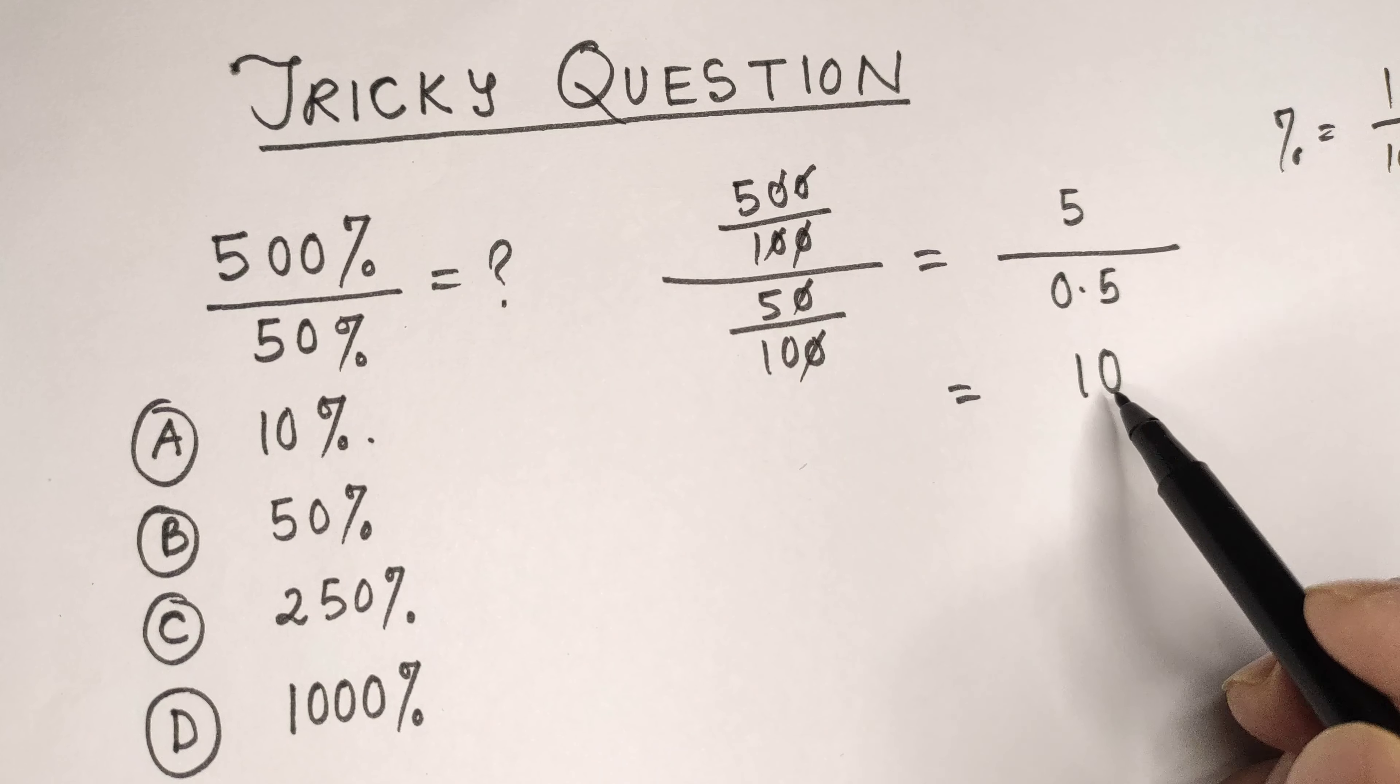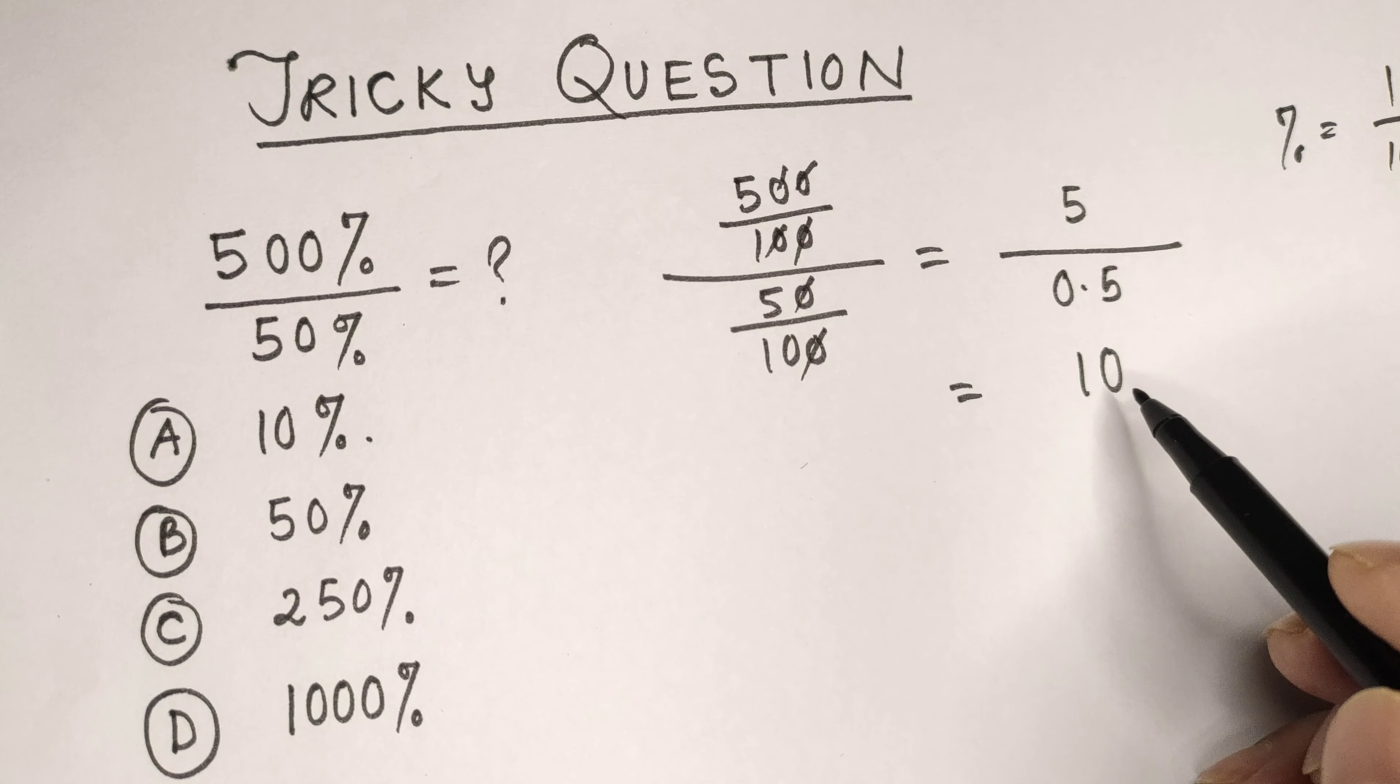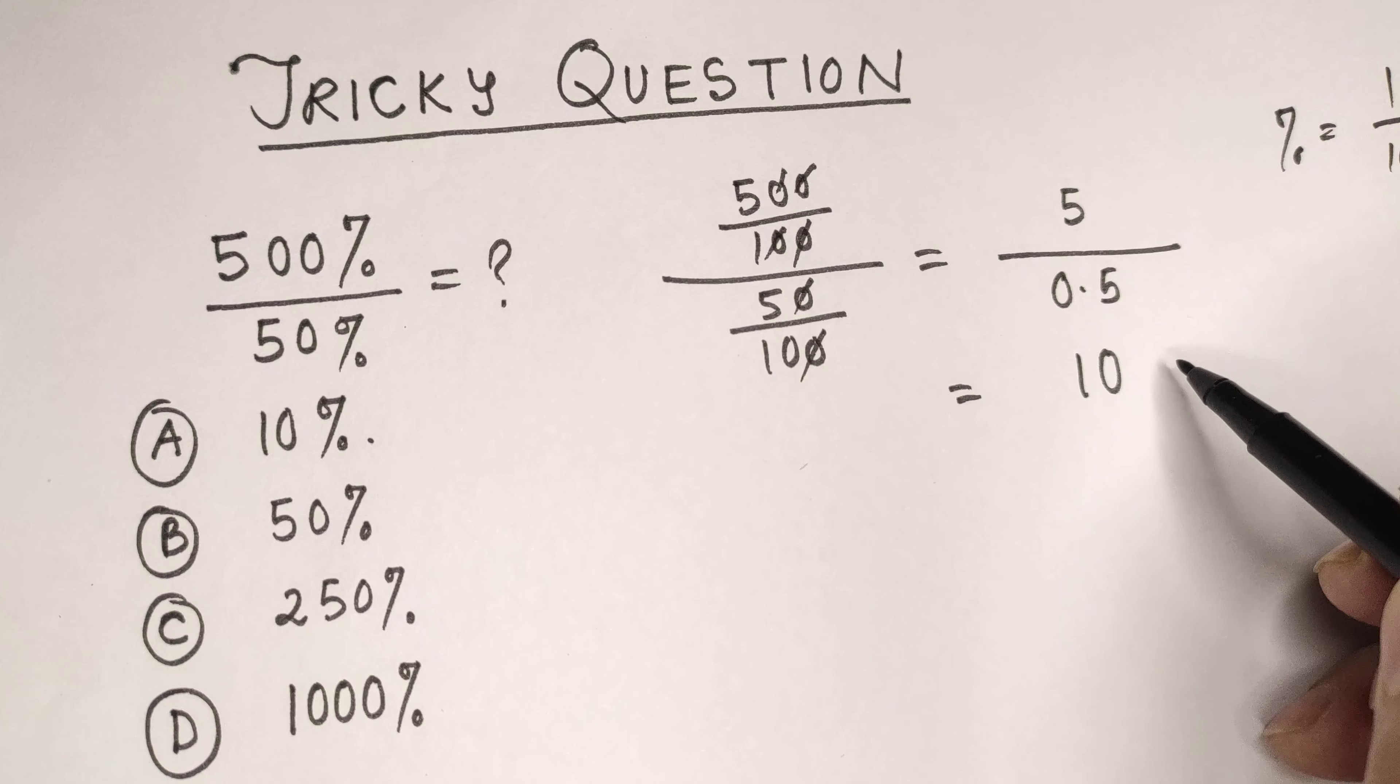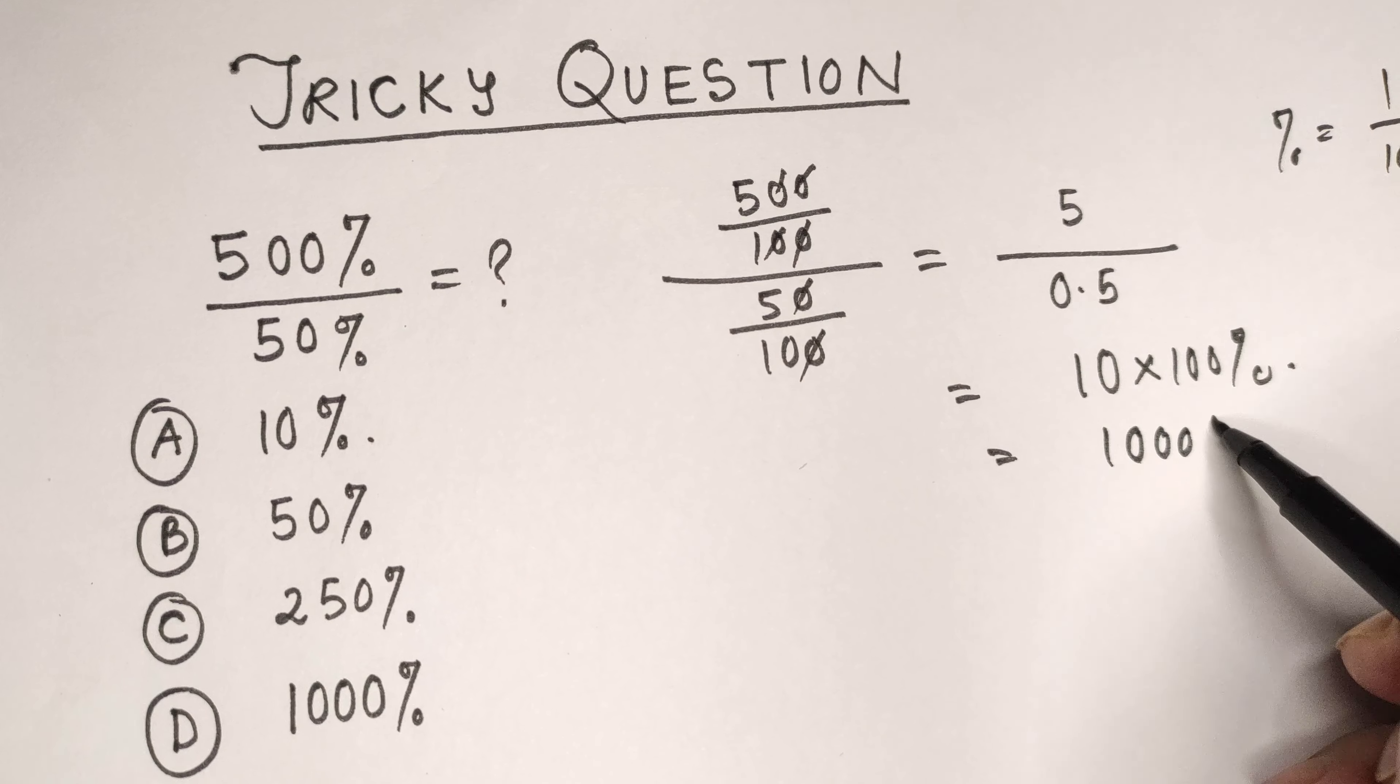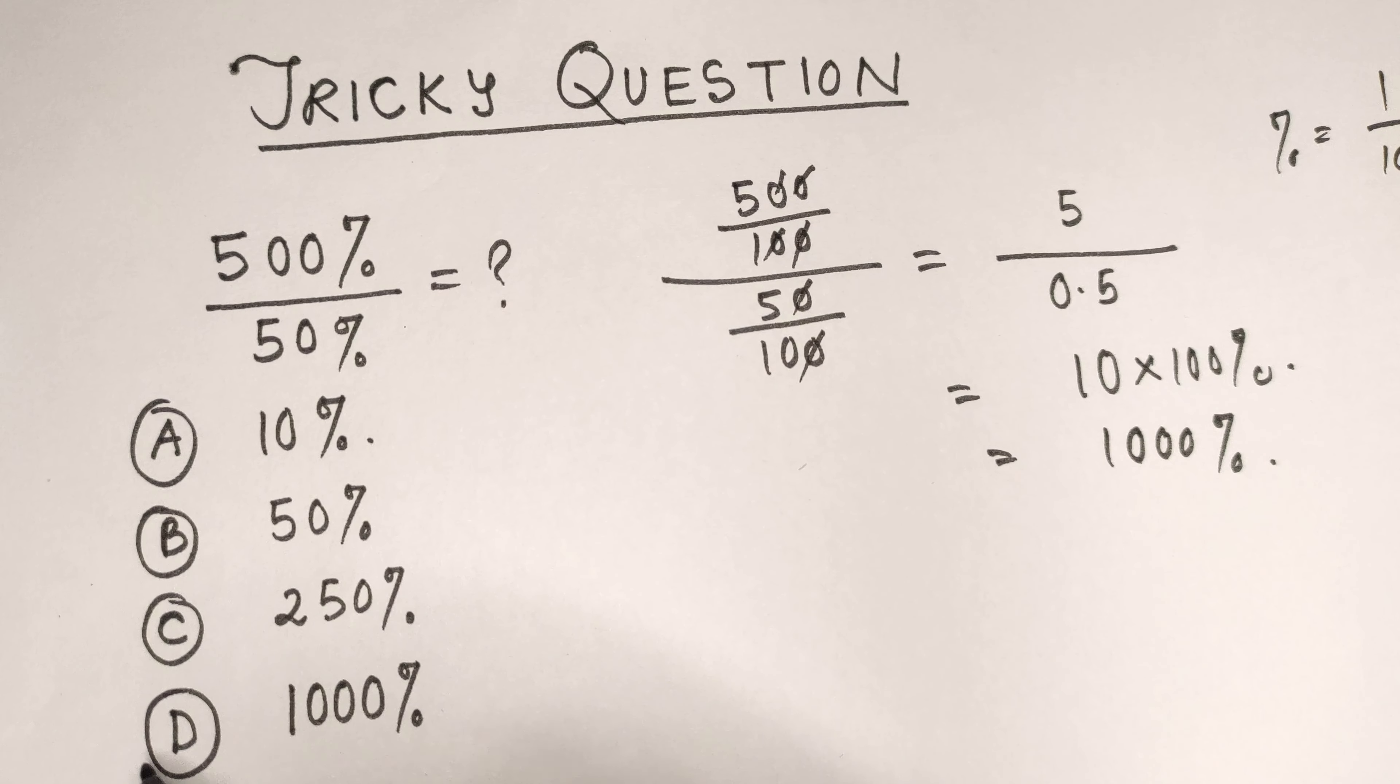But this is not a percentage, it is a decimal. We need to convert this decimal into percentage by multiplying by 100, which gives us 1000 percent. So the correct answer is option D.